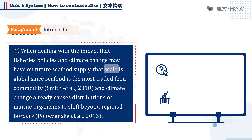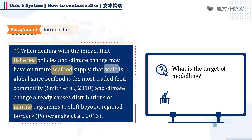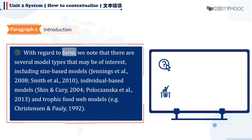What's more, what is the target of modeling that can be inferred? Based on the words like 'fisheries,' 'seafood,' and 'marine,' we could identify that it is about the ocean. Concerned with the aspect of form, the next sentence is the other supporting sentence of sentence one.